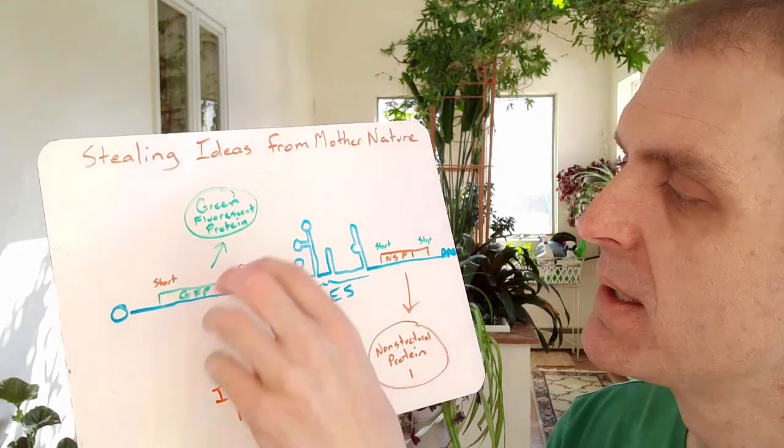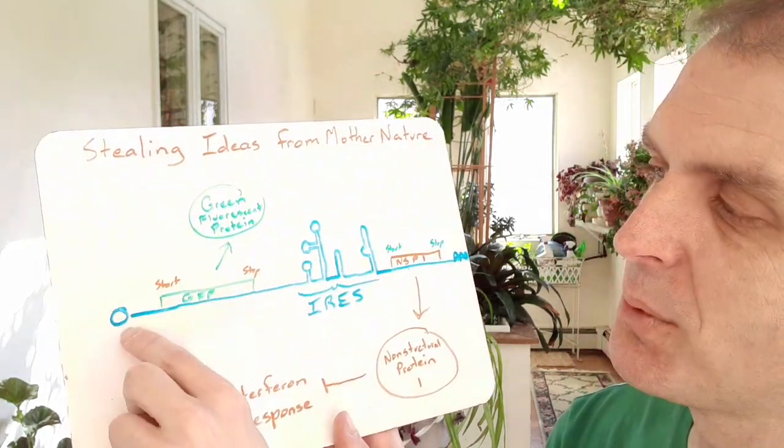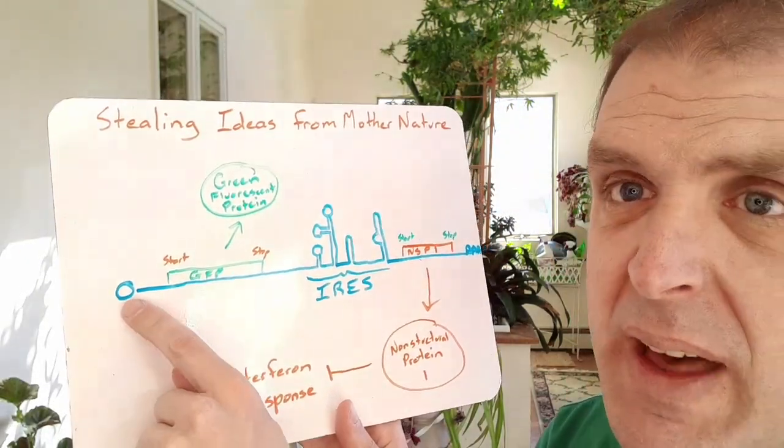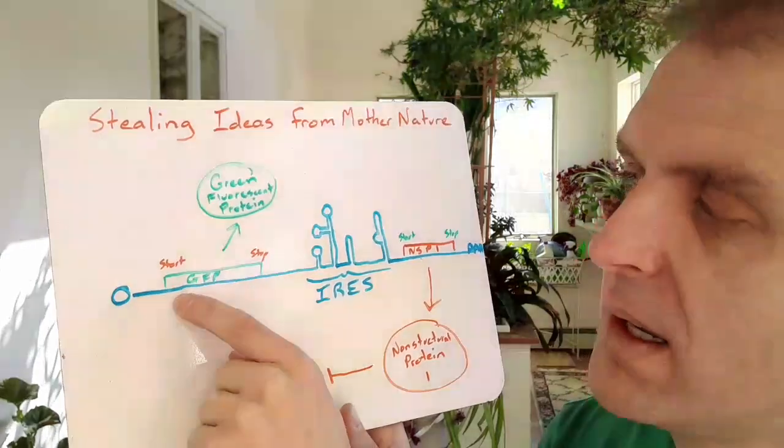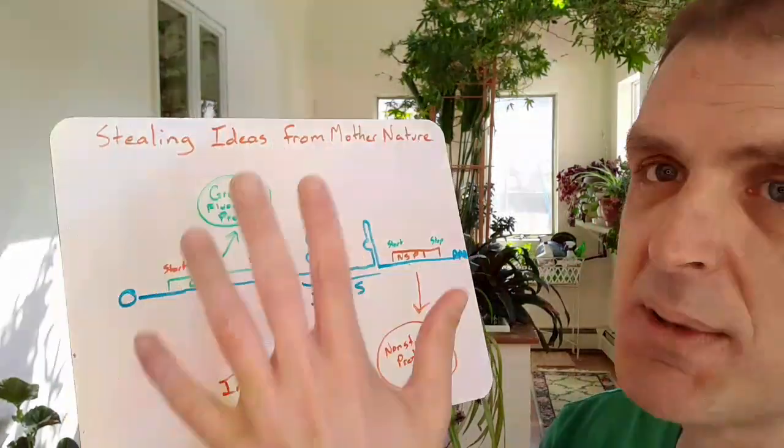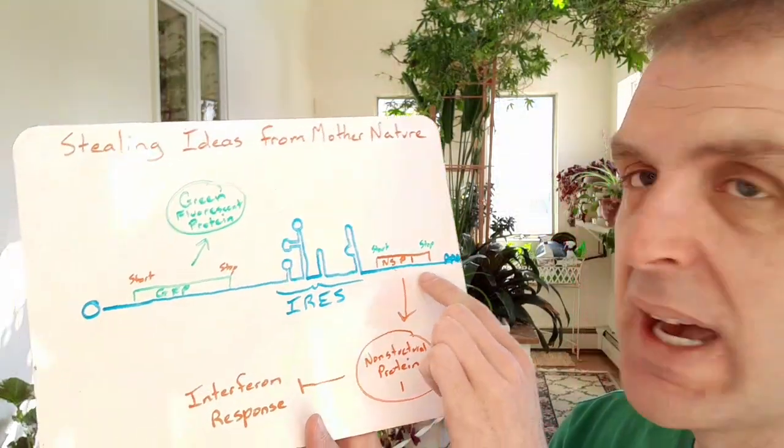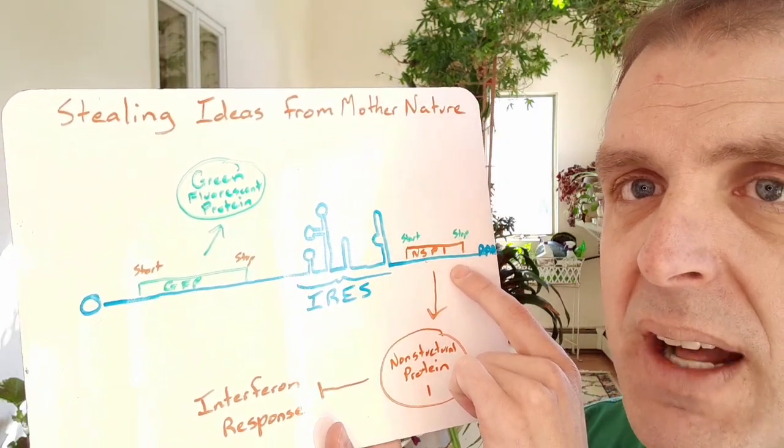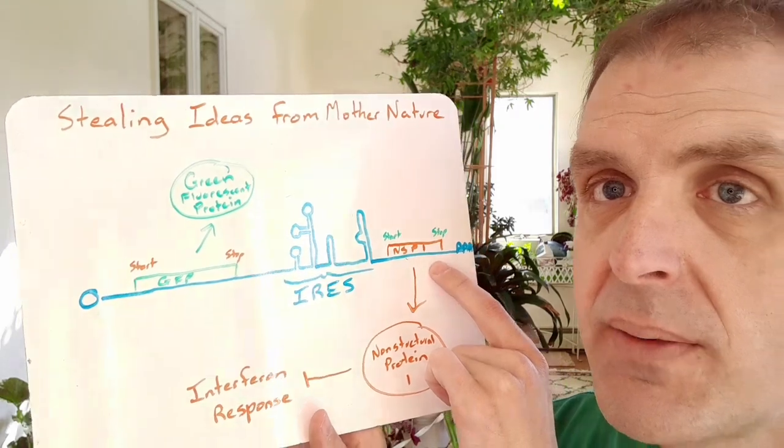It has a start and a stop so the ribosome would be recruited in, or all the eukaryotic initiation factors would be recruited into that cap, you'd get scanning, you'd make the GFP and the ribosome would fall off. We have a second open reading frame that codes for a protein here and I've labeled it NSP1, that's this protein I studied for graduate school.